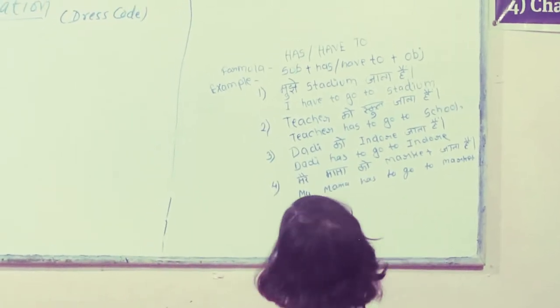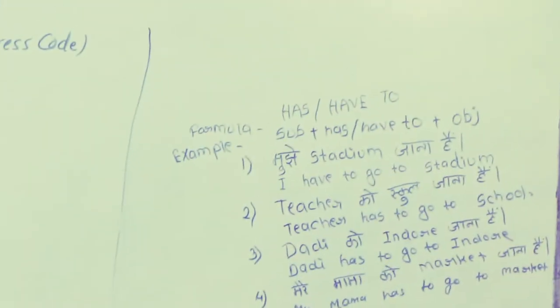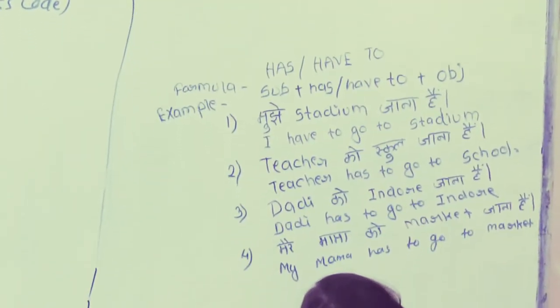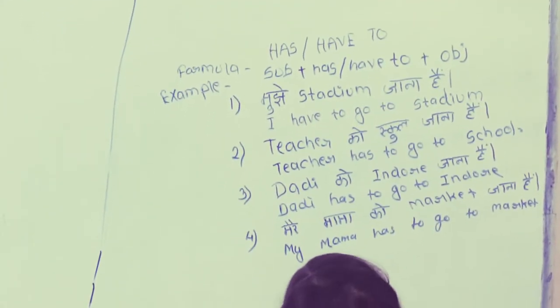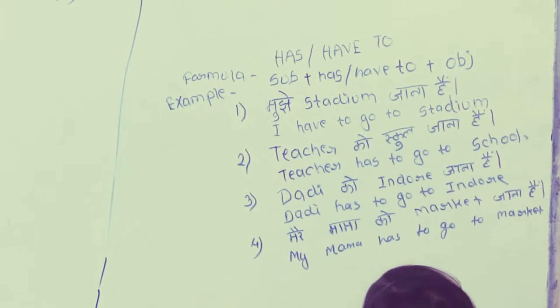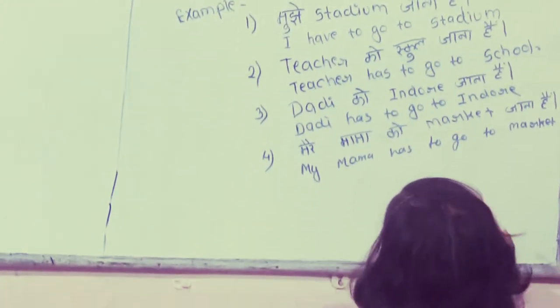Example: Mujhe stadium jana hai — I have to go to stadium. Second: Teacher ko school jana hai — Teacher has to go to school.